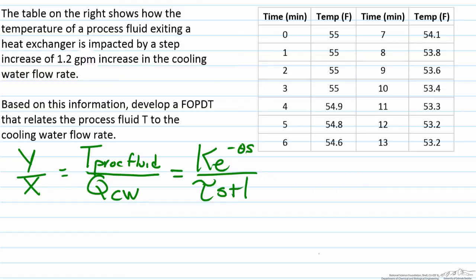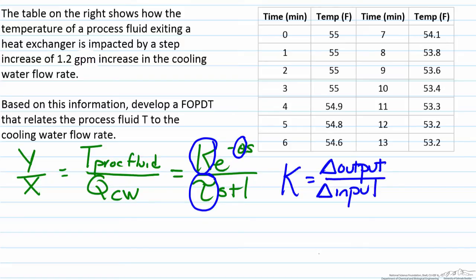So in order to develop a FOPDT we need to be able to determine three variables: the steady state gain k, the dead time theta, and the time constant tau. Finding the steady state gain is probably the easiest of the bunch because what the steady state gain represents is the change in the output at steady state divided by the change in the input, so in this case our step change. So that information we can easily get from the data.